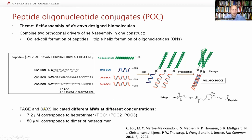From gel experiments and SAXS, there were different molecular weights for this system at different concentrations. At a low concentration of 7.2 micromolar, the indicated molecular weight corresponds to the heterotrimer POC1, POC2, POC3 as expected. But at high concentration, the molecular weight corresponds to a dimer of the heterotrimer — some kind of dimeric system.